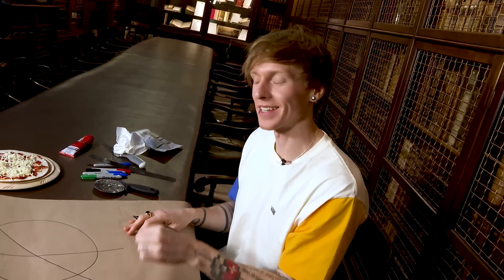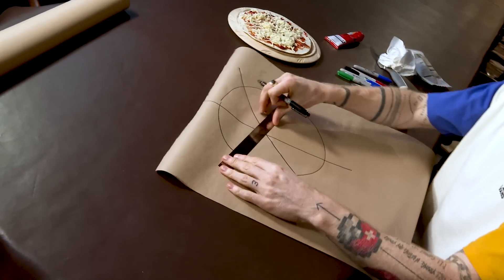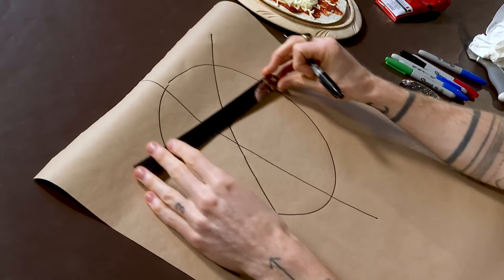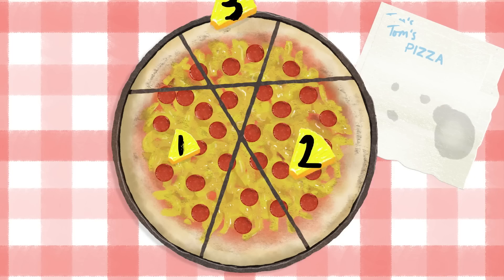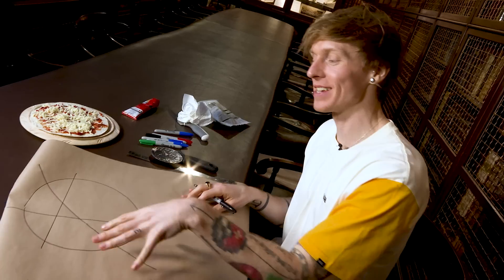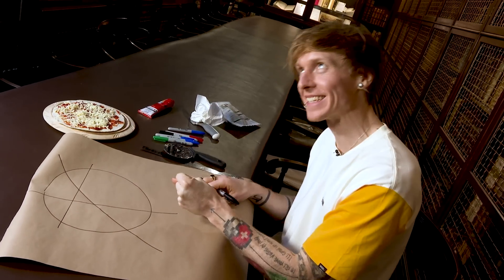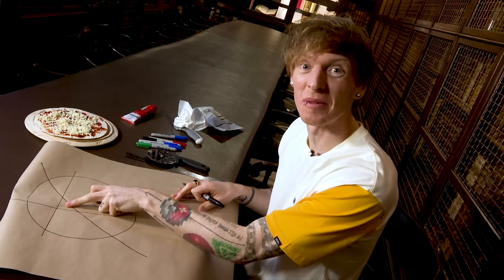However, we want to maximize the number of regions we get. So rather than cutting through that intersection point, I actually want to avoid it and do something like that. Because what's going to happen is I've got this new region that wouldn't have been there had I gone through that point. So I've now got seven instead of six, but obviously this one's quite small and no one wants it.